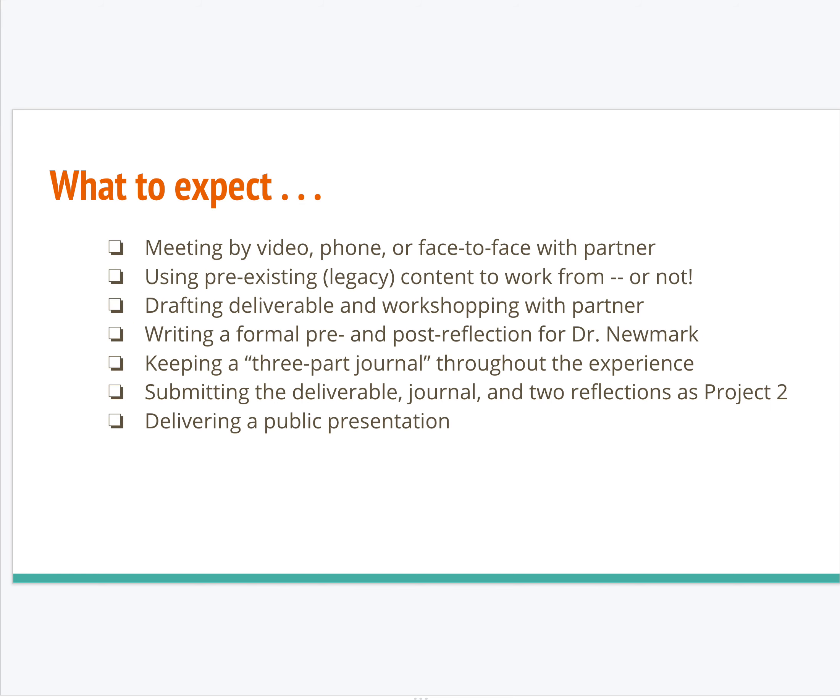In Project 2 — the community engaged learning project, which starts in a few weeks and carries through the end of the semester — you can expect certain requirements. You and your groupmates will be meeting by video, phone, or face-to-face with your partner organization. You may be using pre-existing legacy content to work from, or sometimes your partner won't have what they need and you'll have to create it from scratch. You'll be drafting a deliverable and workshopping it with your partner. You'll write a formal pre- and post-reflection for me, keep a three-part journal throughout the experience, and submit the deliverable, journal, and two reflections as Project 2. You'll also be delivering a public presentation.